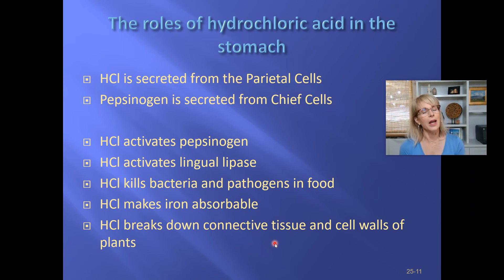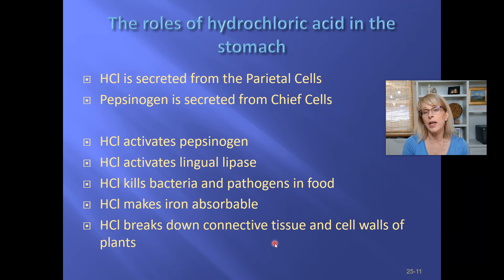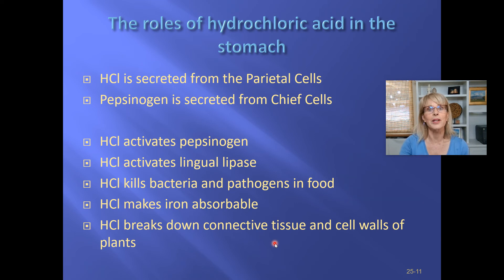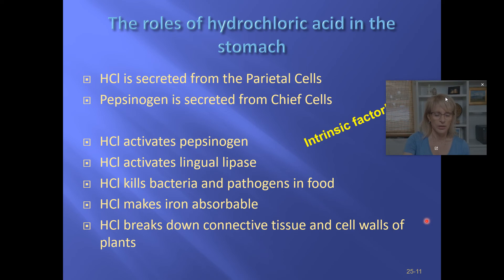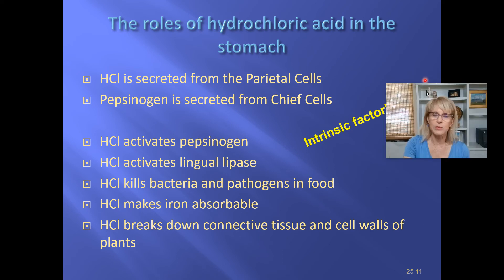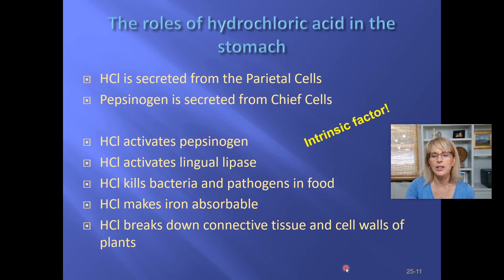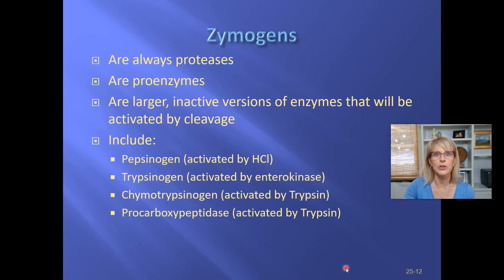Similarly, connective tissue in foods like hamburger is made of protein but isn't easy for enzymes to digest directly. Hydrochloric acid breaks it down and makes it more available for nutrition. So hydrochloric acid does a lot. And don't forget — intrinsic factor is made by the same cells that make hydrochloric acid, the parietal cells, and intrinsic factor helps you absorb vitamin B12.